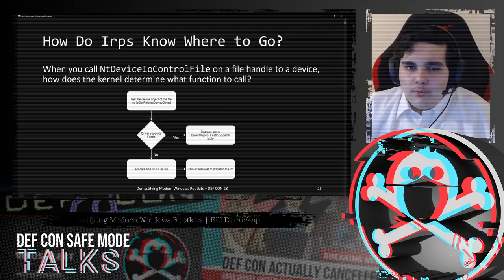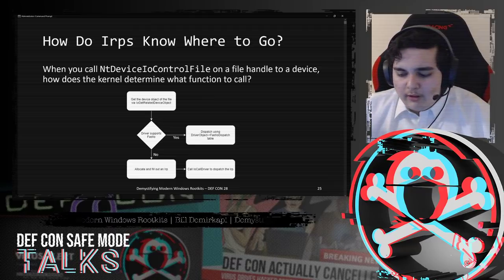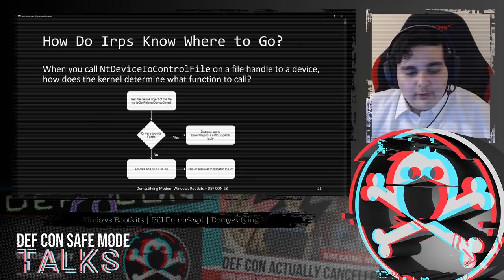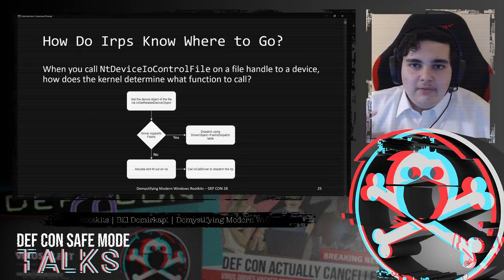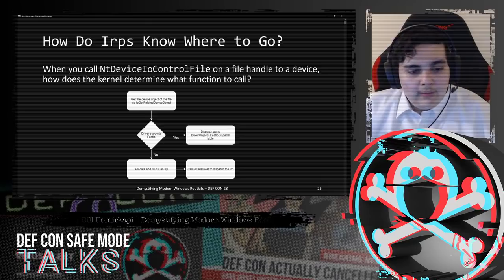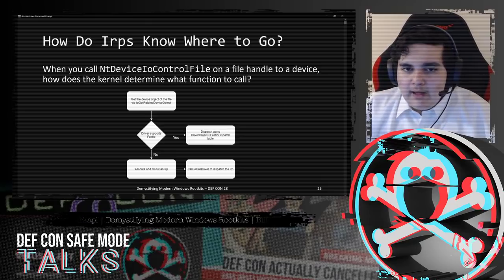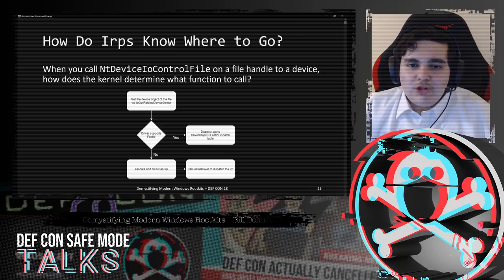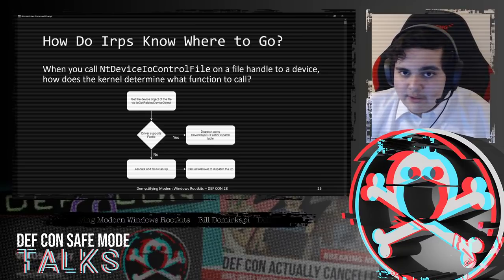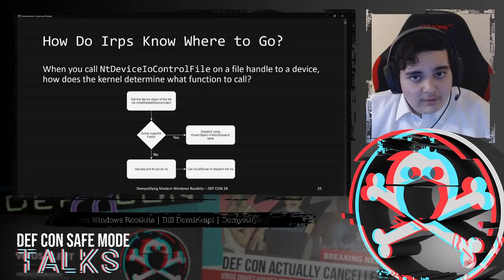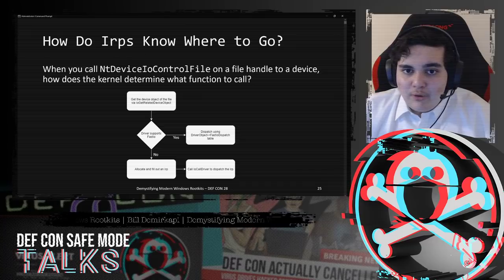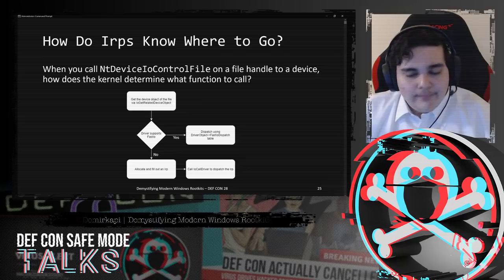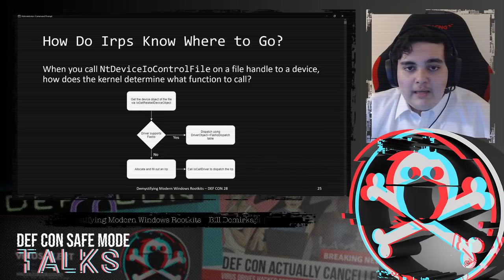So how do IRPs know where to go? How does the kernel determine what function to call on what driver? First, it'll obtain the device object associated with the file object by calling IoGetRelatedDeviceObject - for our purposes, this just retrieves the device object member of the file object structure. If the driver associated with the device supports FastIO, it'll dispatch the request using the FastIO dispatch table part of the driver object structure. If the driver does not support FastIO, it'll allocate and fill out an IRP and forward it to the driver by calling IoCallDriver.